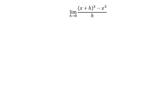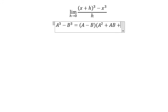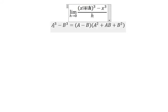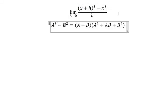We have a³ - b³ = (a - b)(a² + ab + b²). So x + h is like capital A, and x is like capital B. We will apply this formula in this situation.